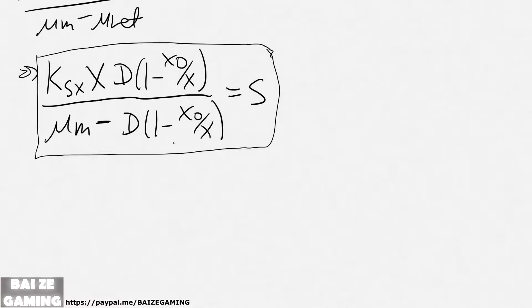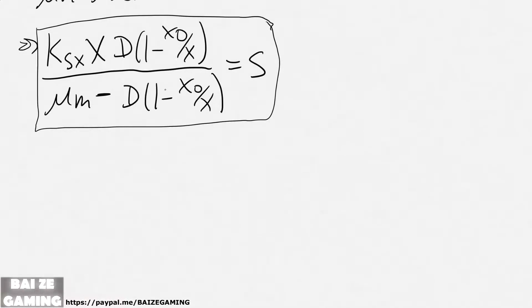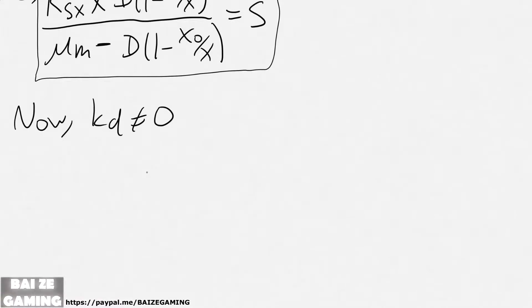And then we can think about it a step further. What if kd is not zero? We'll just use the same equations as before. And before what we had was X. Well, I mean, not all the equations are the same, but this one will be the same.